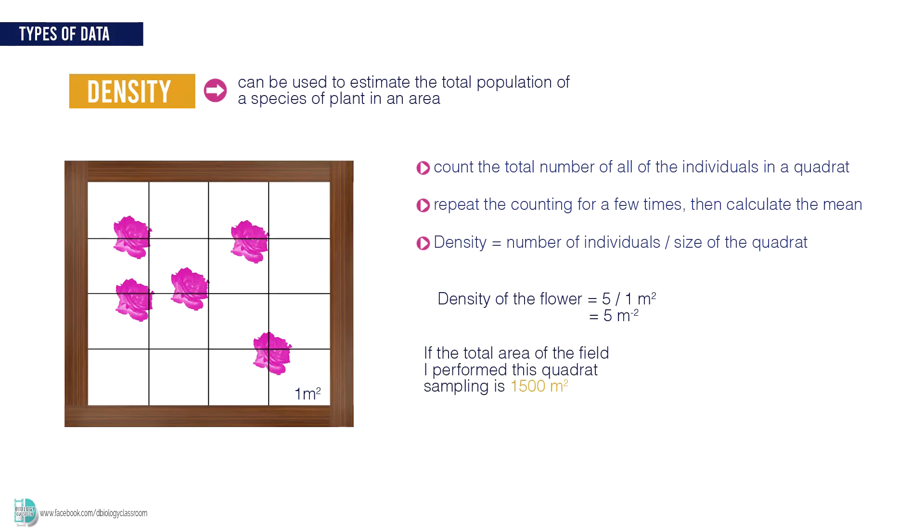If the total area of the field I perform this quadrat sampling is 1,500 meter square, I will be able to estimate the total population size of this species in this area by multiplying the density I obtained with the total area of the sampling site. So there are probably 7,500 individuals of this species in this particular field.